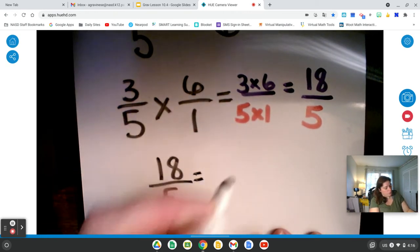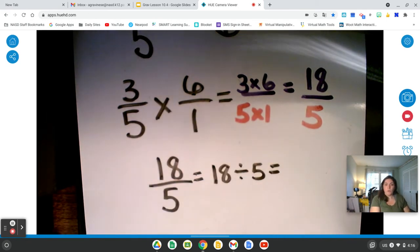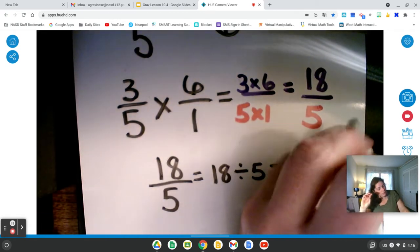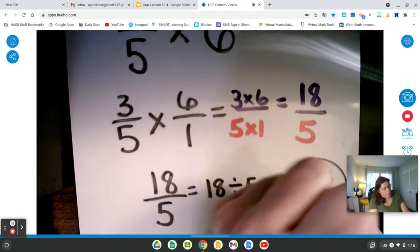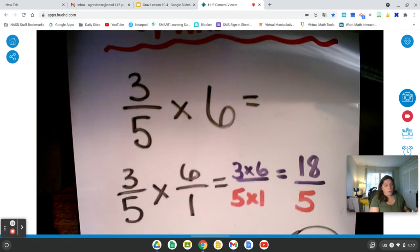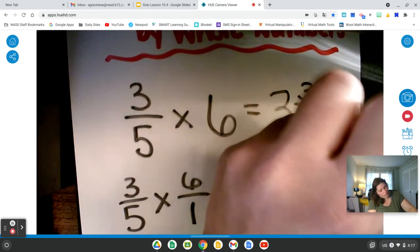Remember, 18 fifths is really 18 divided by 5. So you can do your long division, or you can maybe do that mentally. If you're doing it mentally, 5, 10, 15. Oh, I can take 3 wholes out, which are 15, and 18 minus those 15 I just took out leaves me with 3, and I keep my denominator. So I have a product of 3 and 3 fifths. That's equal to these 18 fifths. So 3 fifths times 6 equals 3 and 3 fifths.